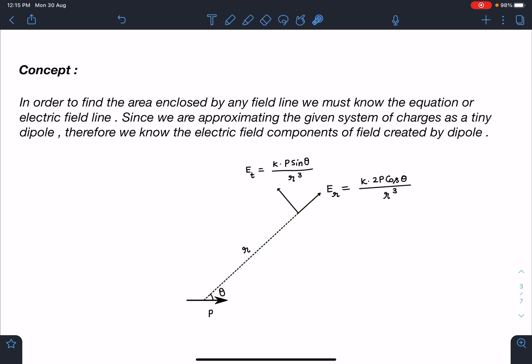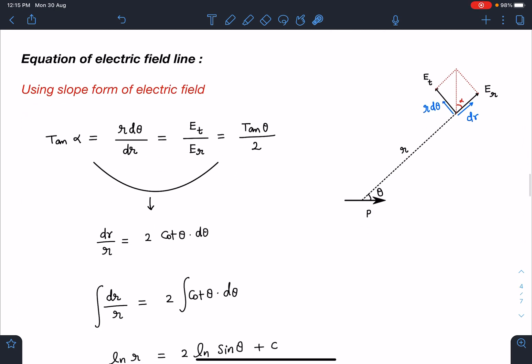The radial component is Eᵣ = k·2P·cos θ / r³. The tangential component perpendicular to the line joining point and origin is Eₜ = k·P·sin θ / r³. From here we develop the logic to find the equation of electric field line. I can write tan α as dy/dx, which corresponds to r·dθ / dr. This value is Eₜ / Eᵣ, which equals tan θ / 2.